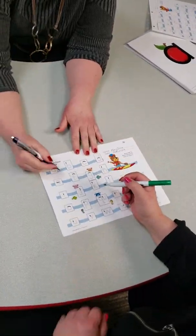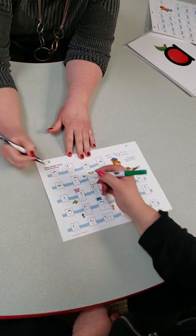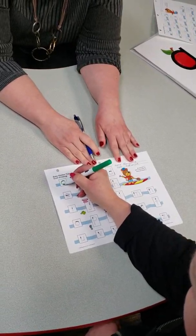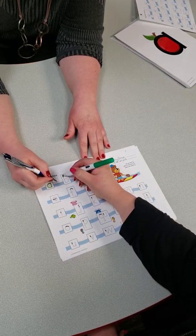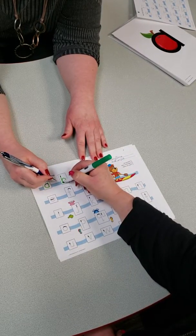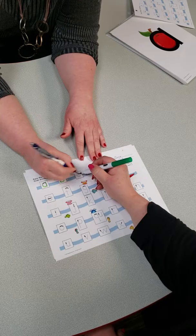Here we go. A is for apple. B is for bear. C is for cookie.